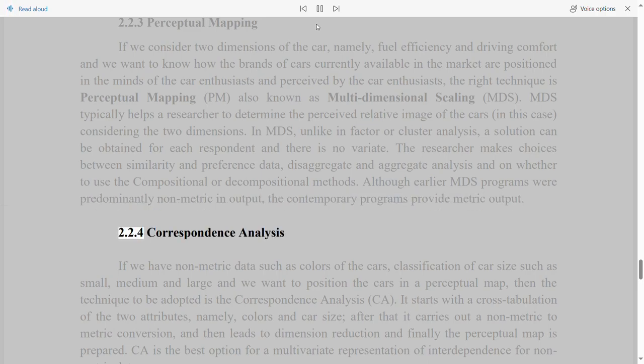2.2.4 Correspondence analysis. If we have non-metric data such as colors of the cars, classification of car size such as small, medium and large, and we want to position the cars in a perceptual map, then the technique to be adopted is the correspondence analysis, CA. It starts with a cross-tabulation of the two attributes, namely, colors and car size. After that it carries out a non-metric to metric conversion and then leads to dimension reduction and finally the perceptual map is prepared. CA is the best option for a multivariate representation of interdependence for non-metric data.